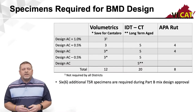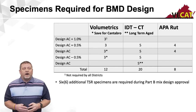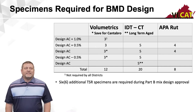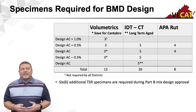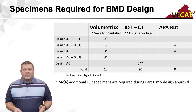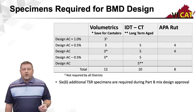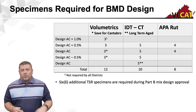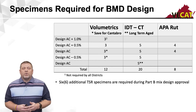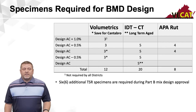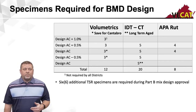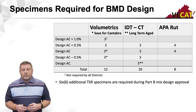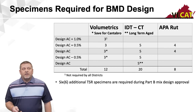Let's start out talking about your mix design specimens. As you can see by this table, there are a lot of specimens required. We haven't changed anything on the volumetric side — we still need the 12 gyratory pills required for a mix design. In addition, we've added the IDT and APA specimens. The IDT is your cracking test, requiring 15 with short-term aging and an additional 5 with long-term aging. Your APA requires a minimum of 8 specimens for rut testing. That's 40 specimens total, plus a minimum of 6 TSR specimens for Part B approval — so 46 specimens to get a BMD mix design approved.